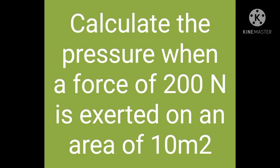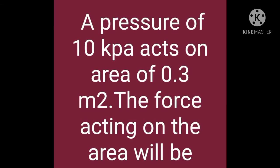Our next question is: calculate the pressure when a force of 200 Newton is exerted on an area of 10 meter square. We have force equal to 200 Newton and area equal to 10 meter square. Using pressure equals force divided by area, we get 200 divided by 10. The zeros cancel, giving us 20 Newton per meter square, also written as 20 Pascal.